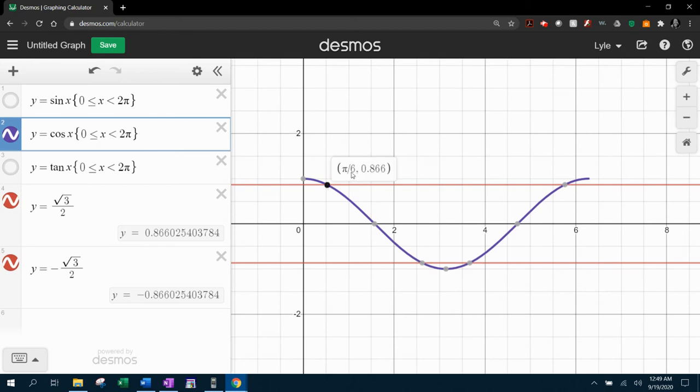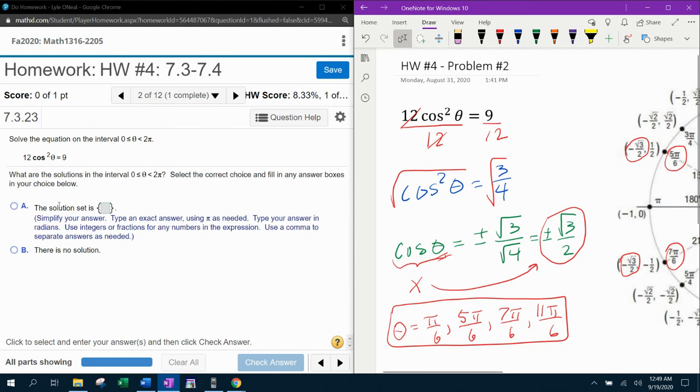So that's going to be pi over six, five pi over six, seven pi over six, and 11 pi over six. Those are all of the angles where the cosine function is either positive or negative square root of three over two, verified with Desmos that we got from the unit circle.